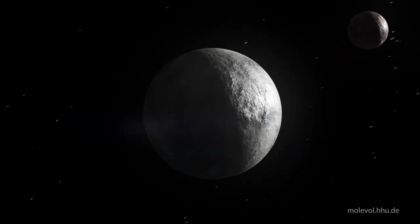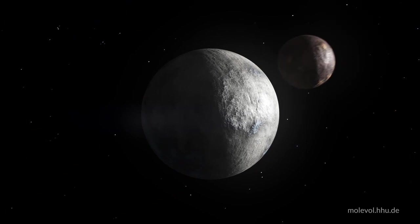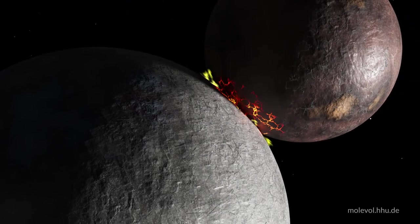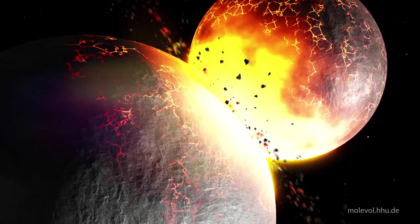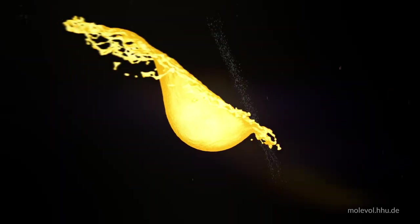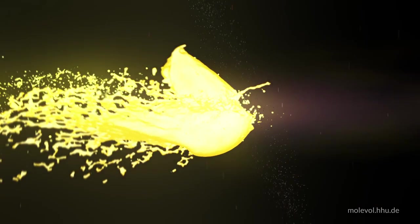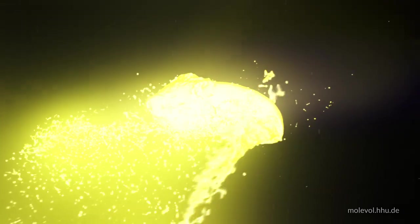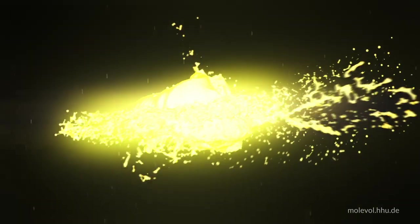4.5 billion years ago, just after the Earth had formed, a Mars-sized planet collided with the Earth in what is called the Moon-forming impact. This melted the entire crust and mantle. Massive amounts of magma were cast out into space, and from that material, the Moon was formed.